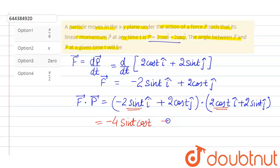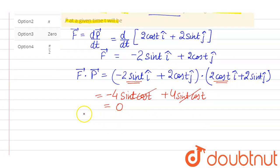And next with j cap we get plus 4 sin t cos t. So they cancel out, it will be 0. So that means the dot product of force with momentum is 0.